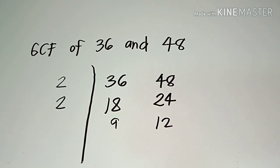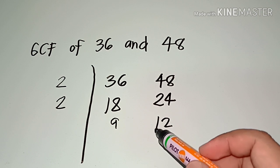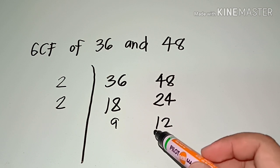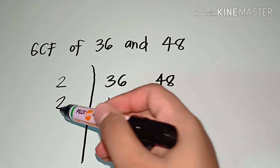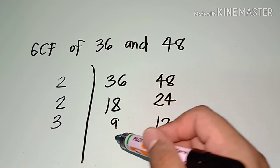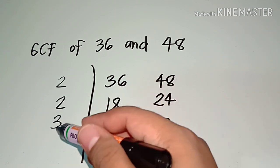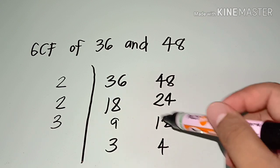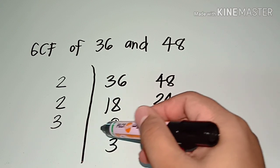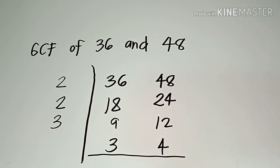We can still divide 9 and 12 by a common number, so we will not stop. This time, we cannot divide 9 and 12 by 2, so we move on to the next number, which is 3. 9 divided by 3 is 3, and 12 divided by 3 is 4. Since we cannot simplify 3 and 4 any further, we stop there.